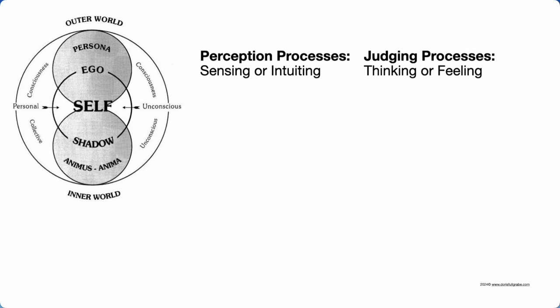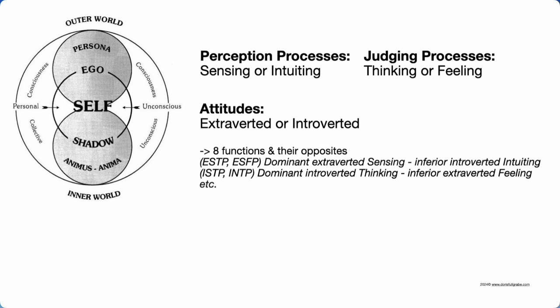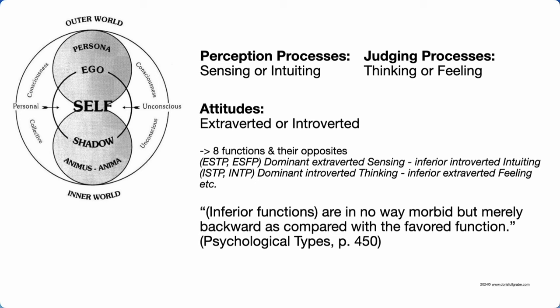It's time to circle back around to the self. Jung's personality theory is one of opposites, tension and balances. Your ego will have a preference for one of two perception processes — sensing or intuiting — and one of two judging processes — thinking or feeling. All can be oriented to the outer or inner world, aka extroverted or introverted. By the time you're in your twenties, you develop a highly differentiated dominant function, and by definition its opposite gets relegated and becomes an undifferentiated inferior function. Your dominant function is your ego consciousness; your inferior function is your anima if you're a man, or animus if you're a woman.